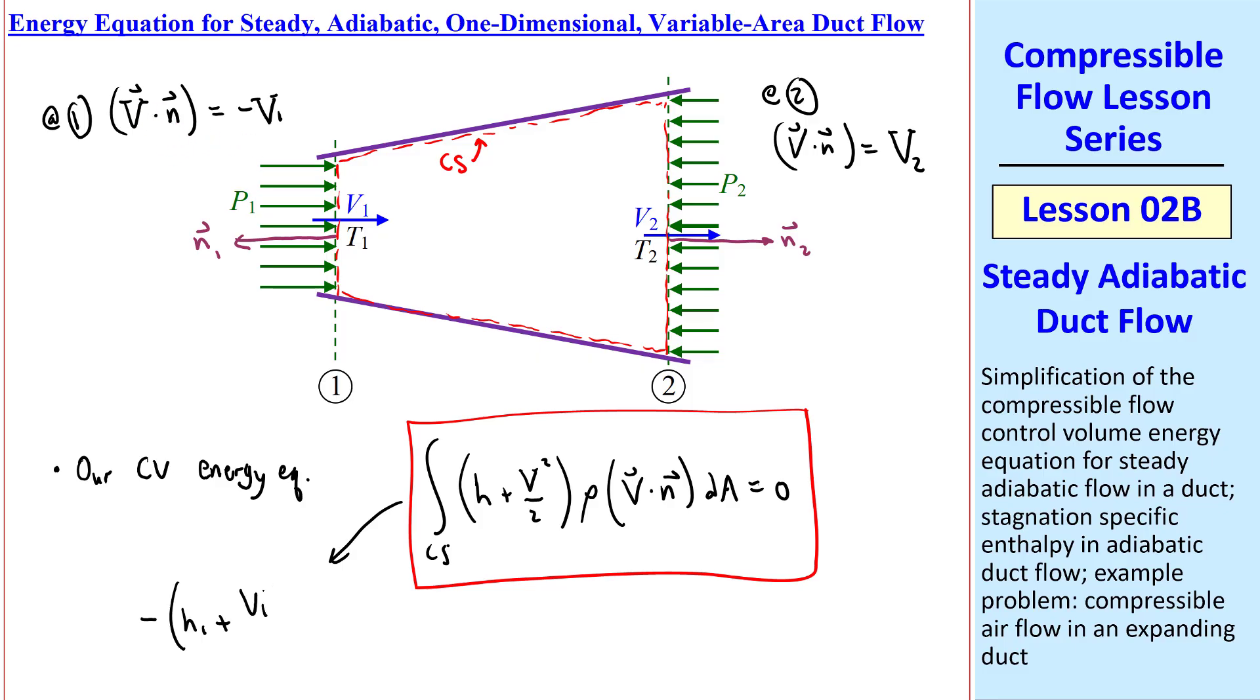This equation thus becomes negative, from here, h1 plus v1 squared over 2, rho 1, v1, A1. And then at the outlet, from here, plus h2 plus v2 squared over 2, rho 2, v2, A2 equals 0.